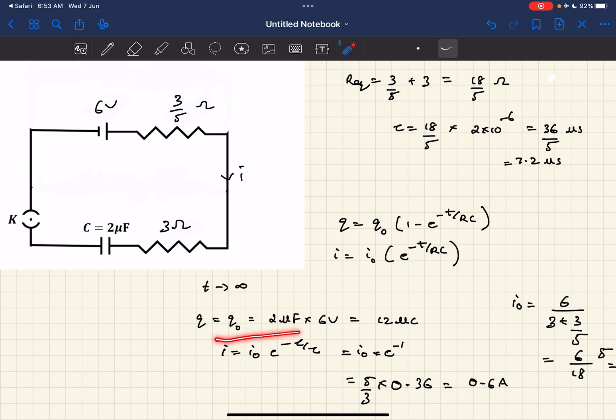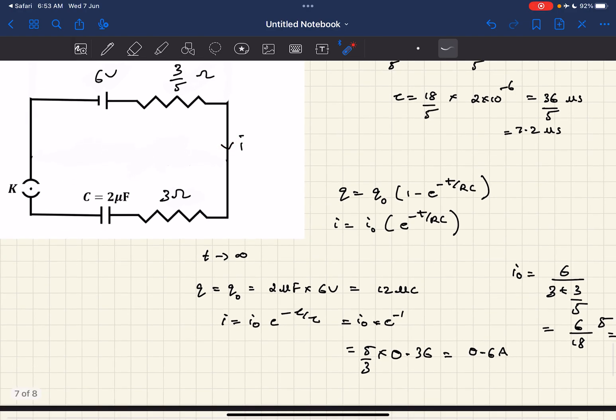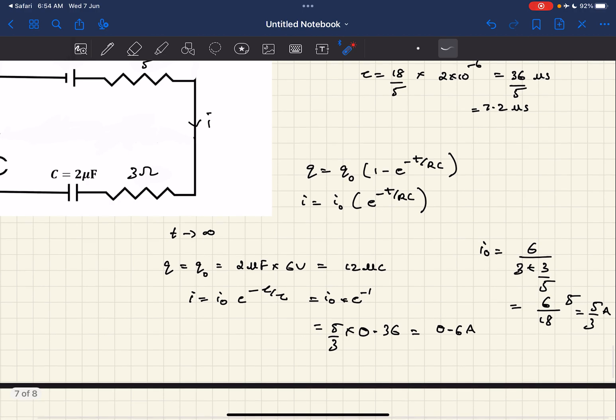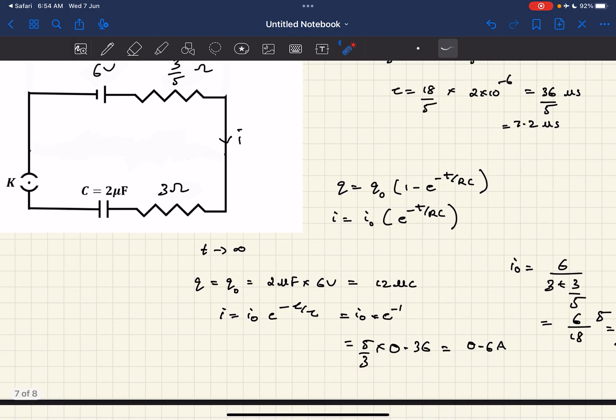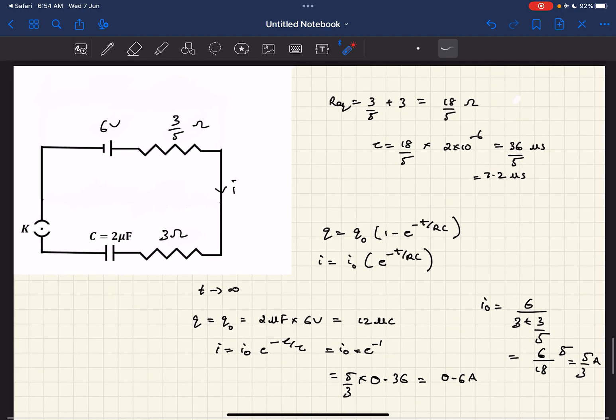Using the formula of current as a function of time, we need to find the current after tau seconds. The answer becomes i naught times e to the power minus 1. i naught is the current just after the key is closed. Using Ohm's law: 6 divided by R equivalent, which is 18 by 5, i naught comes out to be 5 by 3. So 5 by 3 times e to the power negative 1, which is 0.36, gives 0.6 amperes. Hence all options are correct.